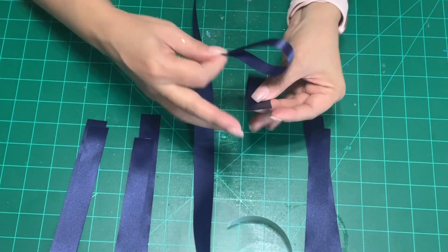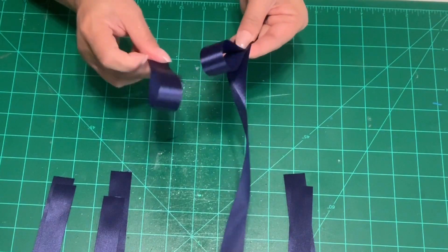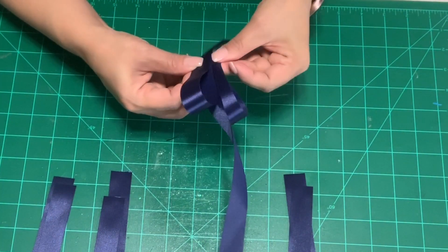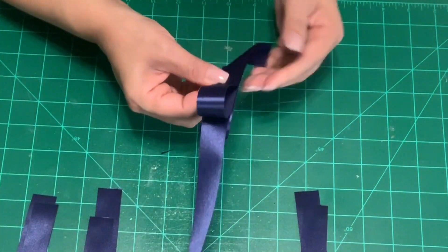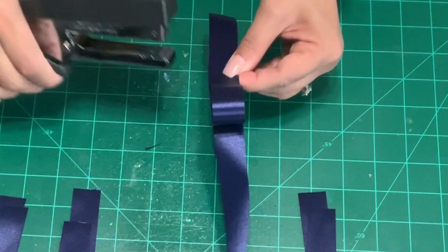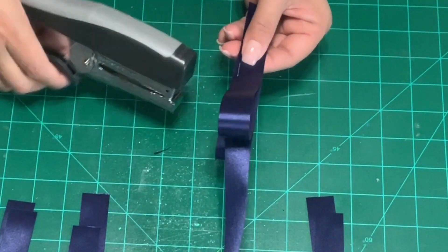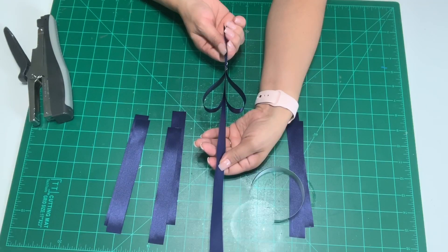Line up one loop on one side of the ribbon and then the other loop to the other side of the ribbon. This will create a heart for you just like this. Turn it over on one side and you will need to add one staple on each side of the ribbon and you have yourself a heart.